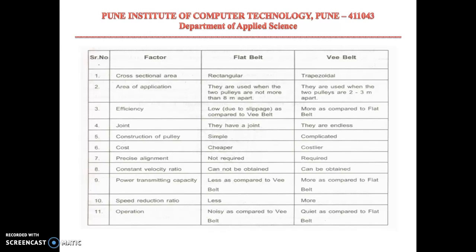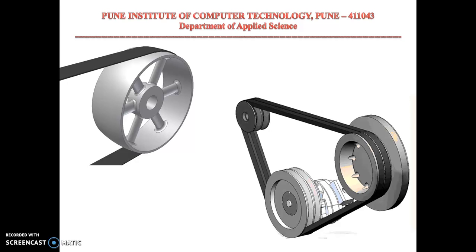Those are the differences between flat belt and V-belt. For a flat belt, the pulley surface has a raised surface at the center — a hump-like or convex structure. These kinds of pulleys are called crown pulleys and are used for flat belt drives. This convex shape is done to avoid slipping, so that the belt stays placed at the center of the pulley.